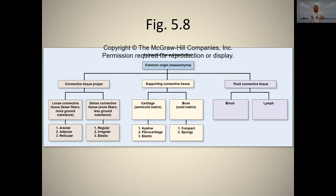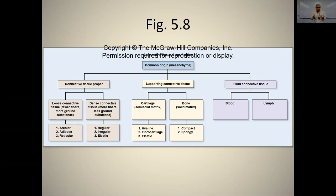Connective tissue proper includes loose connective tissue — areolar, adipose, and reticular, which have fewer fibers and more ground substance — and dense connective tissue, which has more fibers and less ground substance. The ground substance is made of glycoproteins between the cells. Dense connective tissue is highly fibrous, with lots of collagen fibers — a long protein that provides tensile strength and elasticity.